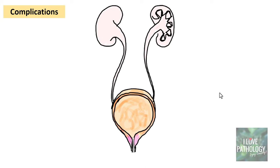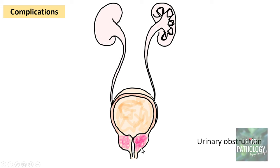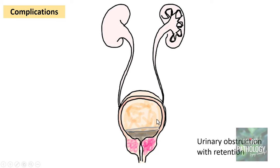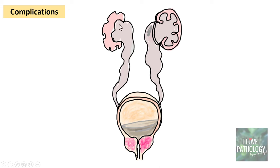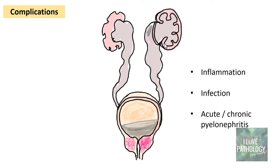The complications of BPH begin with obstruction of urinary outflow. Once obstruction occurs, there is retention of urine, which leads to filling of the bladder, hydroureter, and consequently hydronephrosis. Additionally, stasis promotes acute or chronic pyelonephritis. All these complications arise from nodular hyperplasia of the prostate predominantly in the periurethral zones, obstructing outflow.